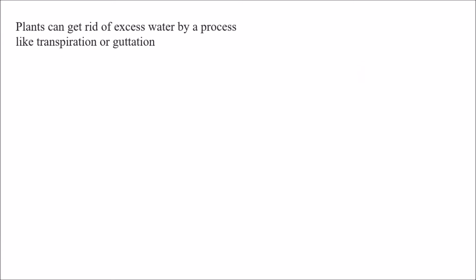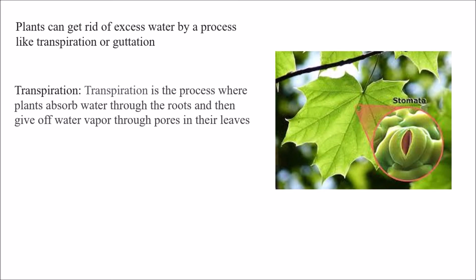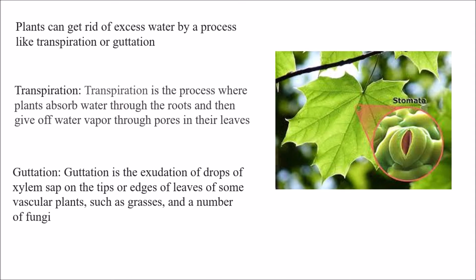Plants get rid of excess water by processes like transpiration or guttation. Transpiration is the process where plants absorb water through the roots and then give off water vapor through pores in their leaves — what we call stomata. Guttation is the exudation of drops of xylem sap on the tips or edges of leaves of some vascular plants such as grasses, and also in a number of fungi.